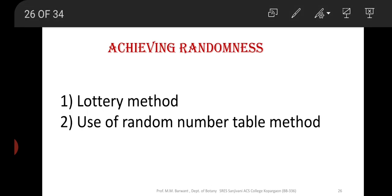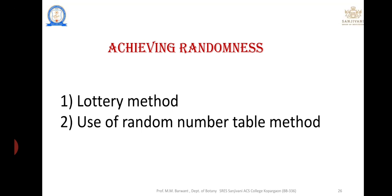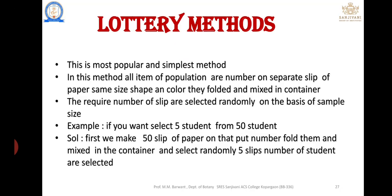Next is achieving randomness — how we achieve or perform a randomness experiment. There are two methods: the lottery method and the use of a random number table method. First, we look at the lottery method.